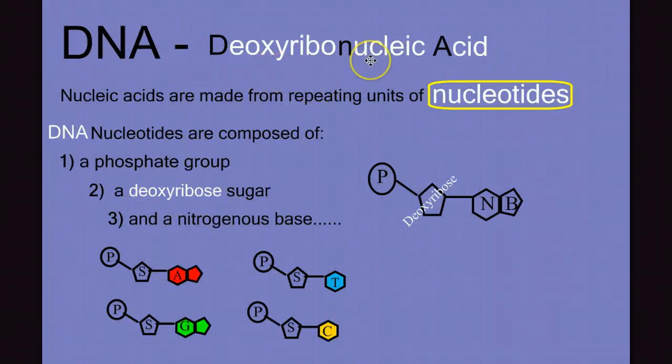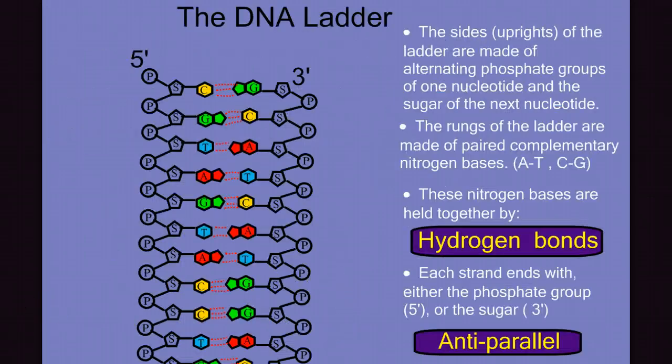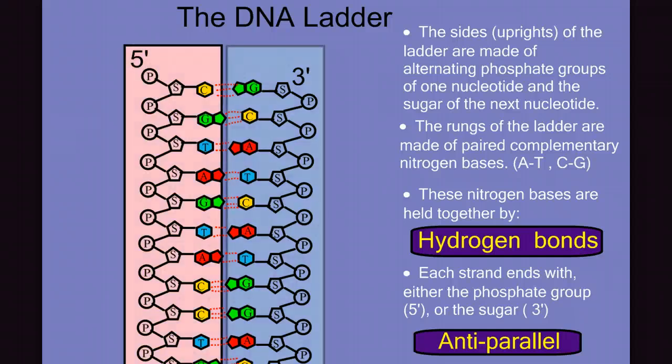DNA, or deoxyribonucleic acid, is made of repeating units of nucleotides, and each nucleotide is made of a phosphate group, a deoxyribose sugar, and one of four nitrogen bases, giving us adenine, thymine, guanine, and cytosine.